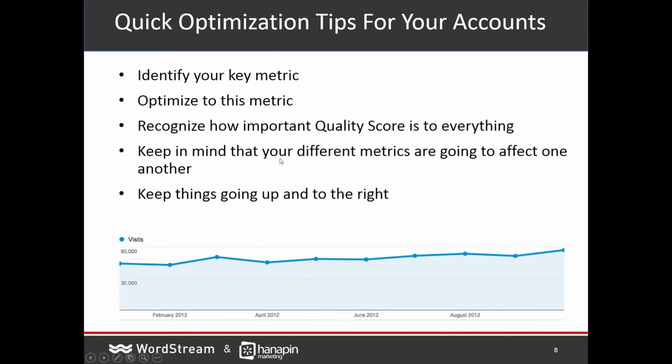In terms of optimizing your account, there are a few important things to highlight. First, identify your key metric — things like click-through rate or quality score might be important, but cost per conversion, number of conversions, revenue — you also want to have that at the forefront of your mind when auditing. Recognize how important quality score is to everything. Keep in mind that different metrics affect one another: if you improve click-through rates, it affects how much you're paying for keywords, your overall cost, and CPAs. Everything in PPC is kind of interlinked.